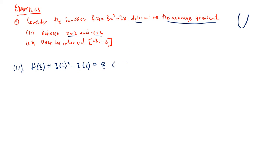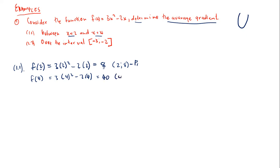Now we determine f(4) = 3(4²) − 2(4) = 3(16) − 8 = 48 − 8 = 40. So point 2 has coordinates (4, 40). Now I want to determine the average gradient between these two points.